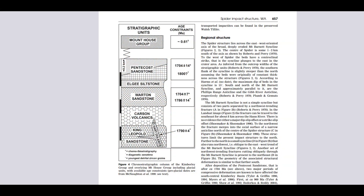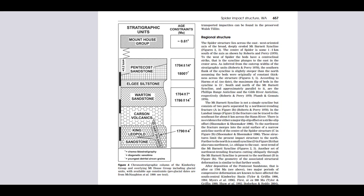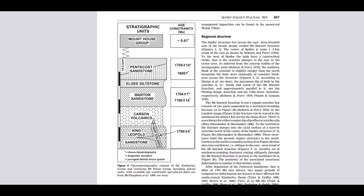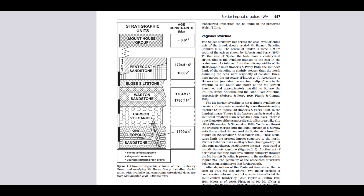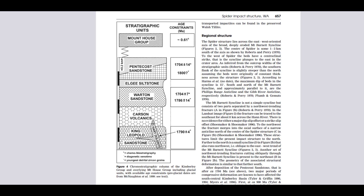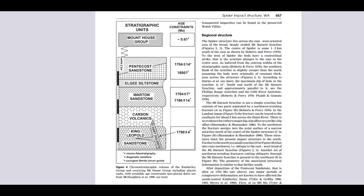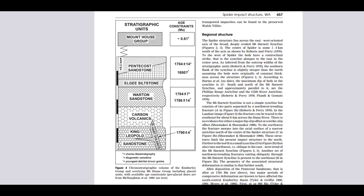The geology of the Spider Impact Structure is complex and multi-layered, reflecting the various stages of its formation and subsequent geological processes. The target rocks at the impact site are primarily shallow marine sandstone and siltstone, deposited during the Paleo-Proterozoic era in what is now the Kimberley Basin. The oldest rock unit exposed within the structure is the Wharton Sandstone, a mature medium-grained arenite that may be up to 500 metres thick in some areas. This sandstone is overlain by the Algae Siltstone — a succession of siltstone and mudstone with interbedded sandstone layers — and then by the Pentecost Sandstone, a mature quartzitic arenite.